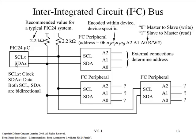The SCL and SDA lines will pull a signal low, but they will not typically drive it high, instead relying on these two resistors to provide the pull-up to power capability of the bus.